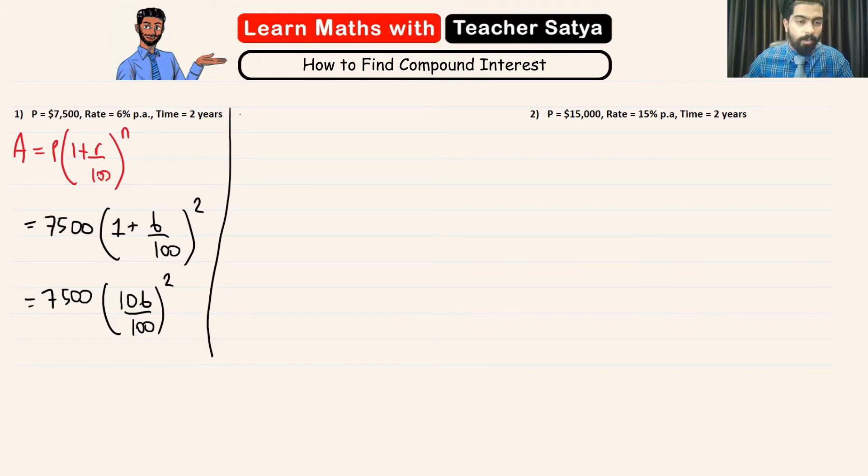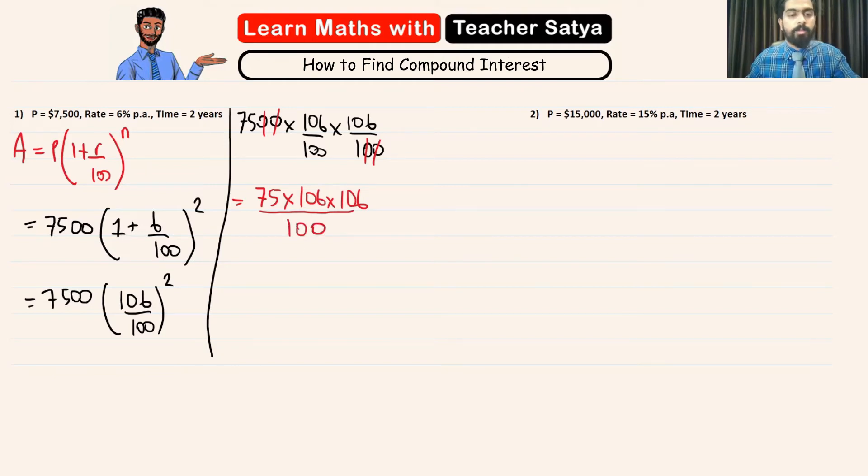Now, what we have is 7500 multiplied with 106 over 100 times 106 over 100. Now, let's go ahead and simplify the zeros. These two zeros can simplify each other easily. And what we have in the numerator is 75 multiplied by 106 times 106 over 100.